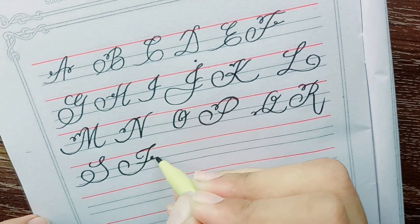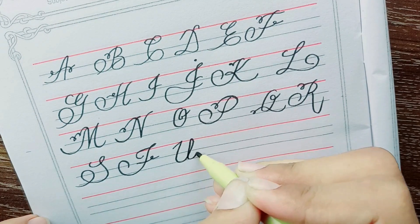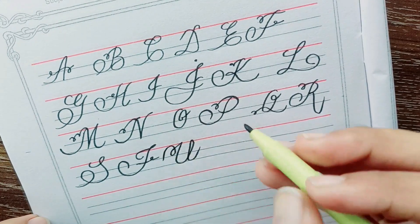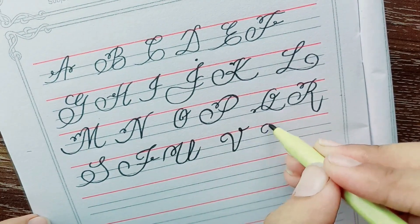T. T for tiger. U. U for umbrella. V. V for vase.